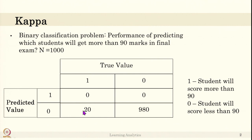The classifier also predicted the other 20 students who actually got more than 90 marks as non-performers, i.e., less than 90 marks. Consider this table — what will be the kappa score and what will be the accuracy?